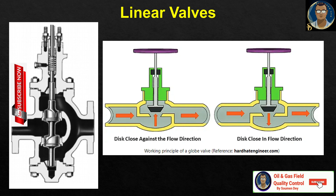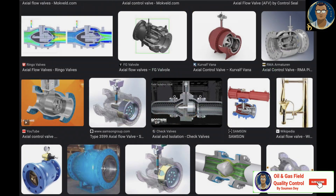Linear valves come in two types: multi-turn and axial. Both rely on the linear motion of the flow obstructor but differ in construction and operation. Multi-turn rising stem valves move the obstructor by rotating a threaded rod, also called the stem, which is attached to the obstructor. These are mostly used for flow control applications. Axial valves use pneumatic and electromagnetic force to slide the obstructor along the axis. Co-axial valves and angle seat valves are examples of axial valves.